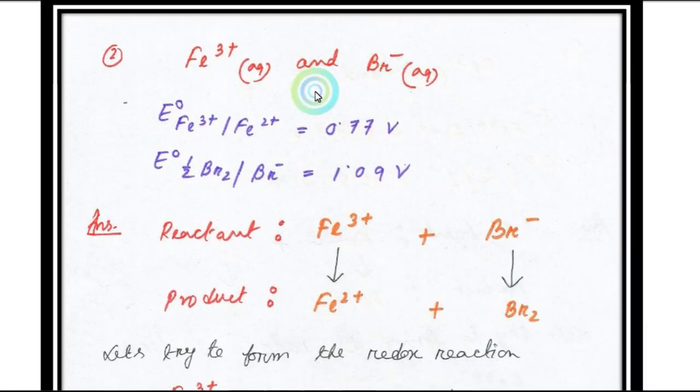Now let me take another example: Fe3+ and Br-. If this reaction happens, will it be feasible or not? Given standard electrode potentials. The reactants are Fe3+ and Br-, and the predicted products are Fe2+ and Br2. The electrode potential for Fe3+ to Fe2+ is 0.77 V, and for Br2 to Br- is 1.09 V.